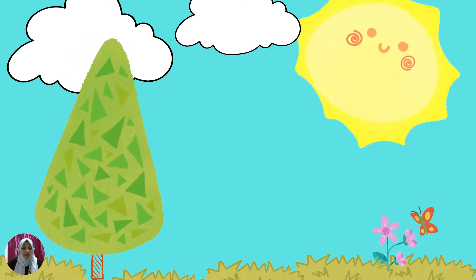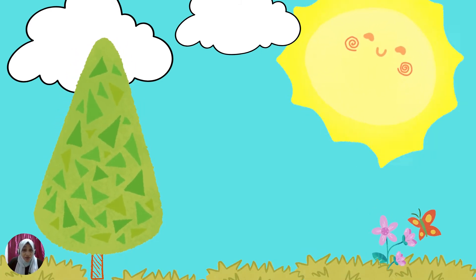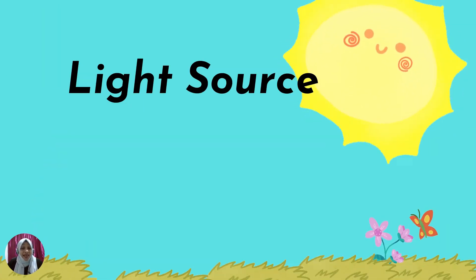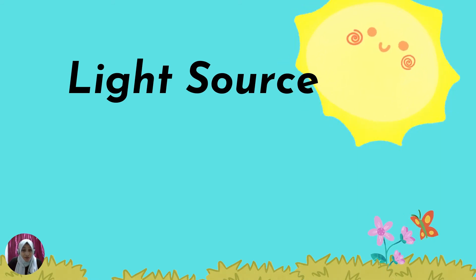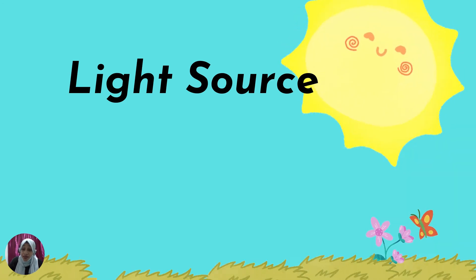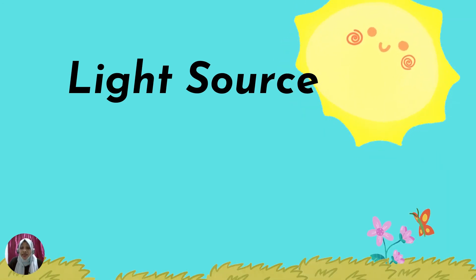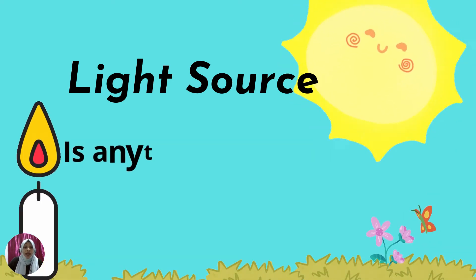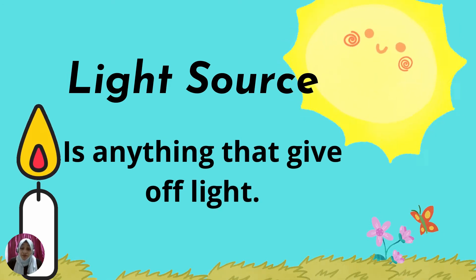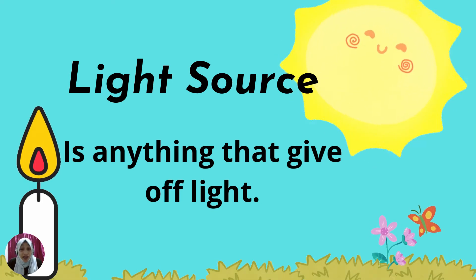So we can only see when there is light. Now when we look at this view here, what gives us light? Yes, the sun. So the sun is a light source because it gives us light. So what is the meaning of light source? A light source is anything that gives off light.